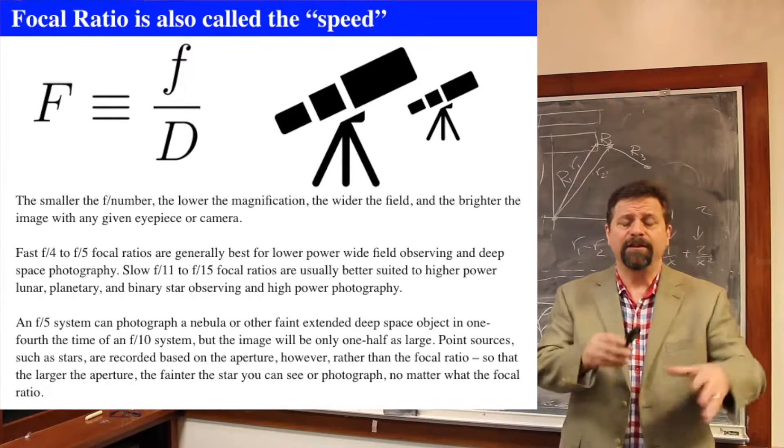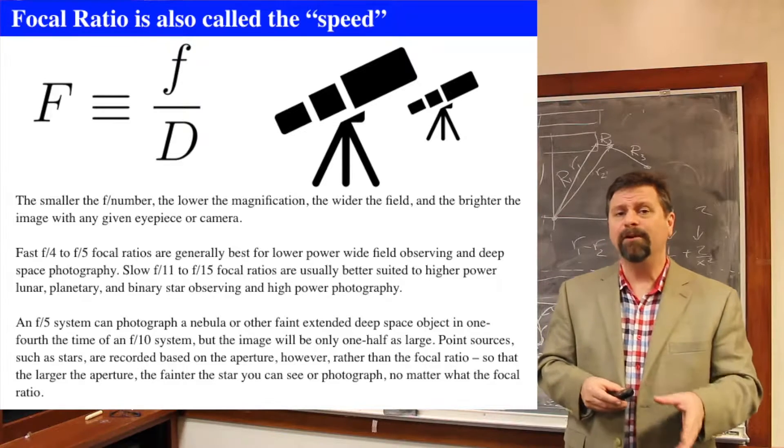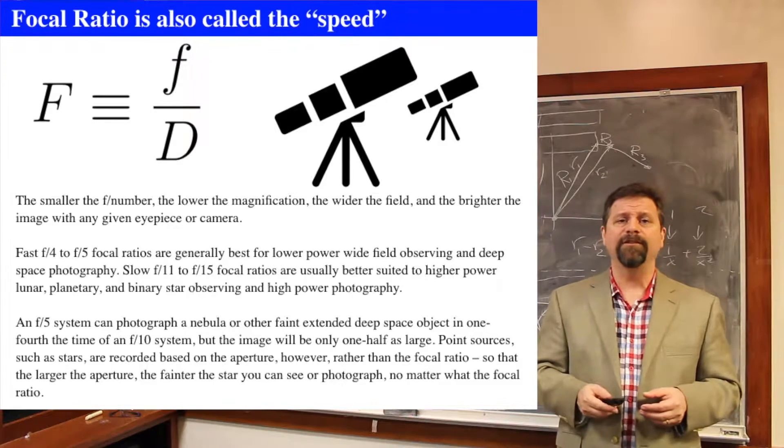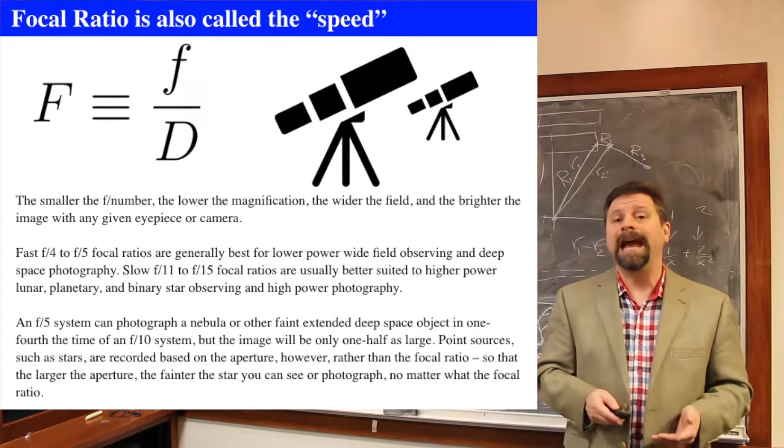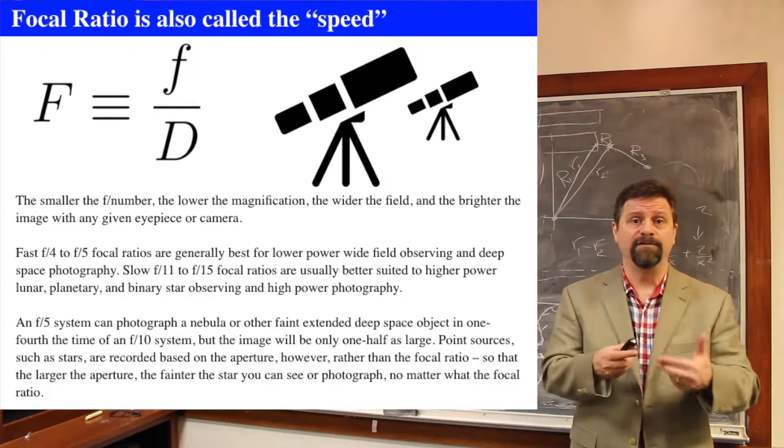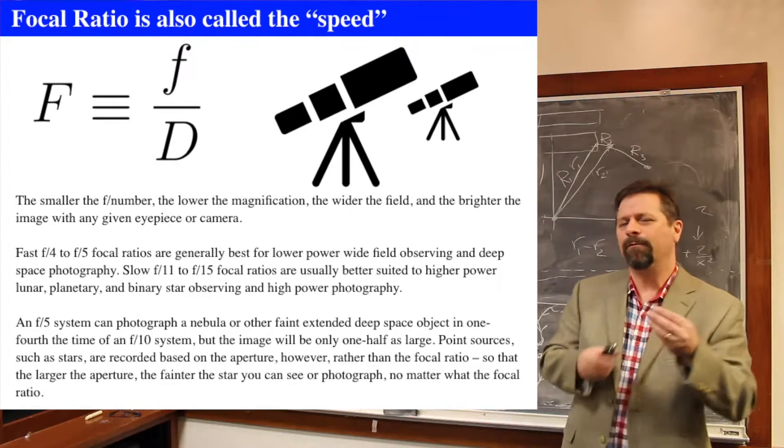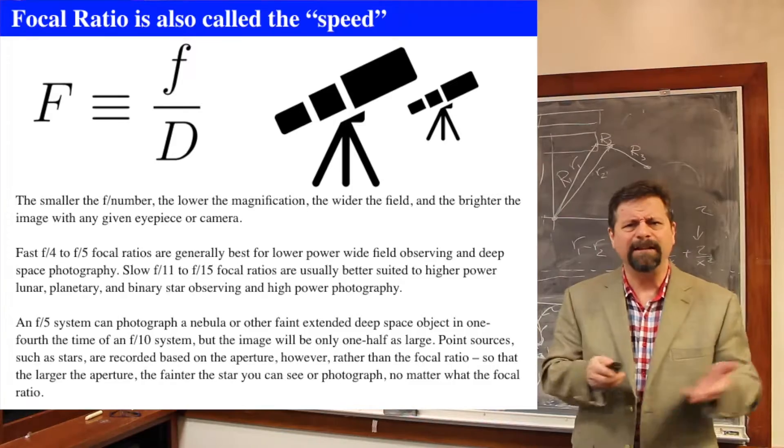Point sources like stars, they don't really care about that. We're only concerned right now at this moment with extended objects. But point sources like stars, they care more about the aperture because you're just trying to collect photons from a point source. But for a focal ratio, that's what we're talking about, getting spread out, getting brighter and dimmer.